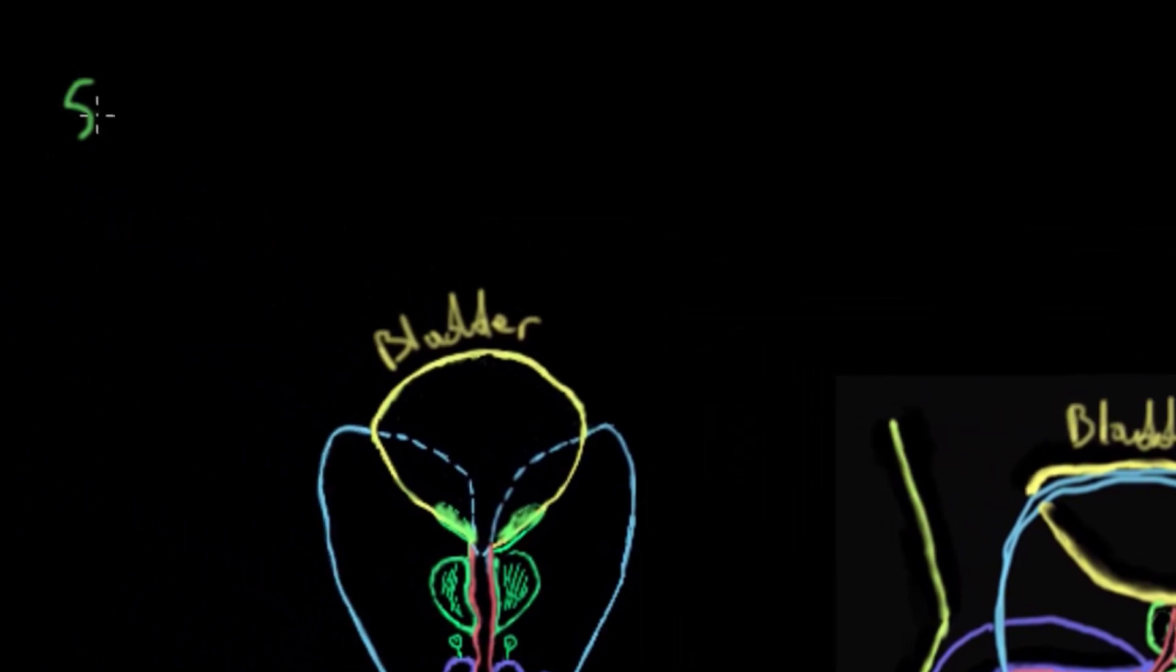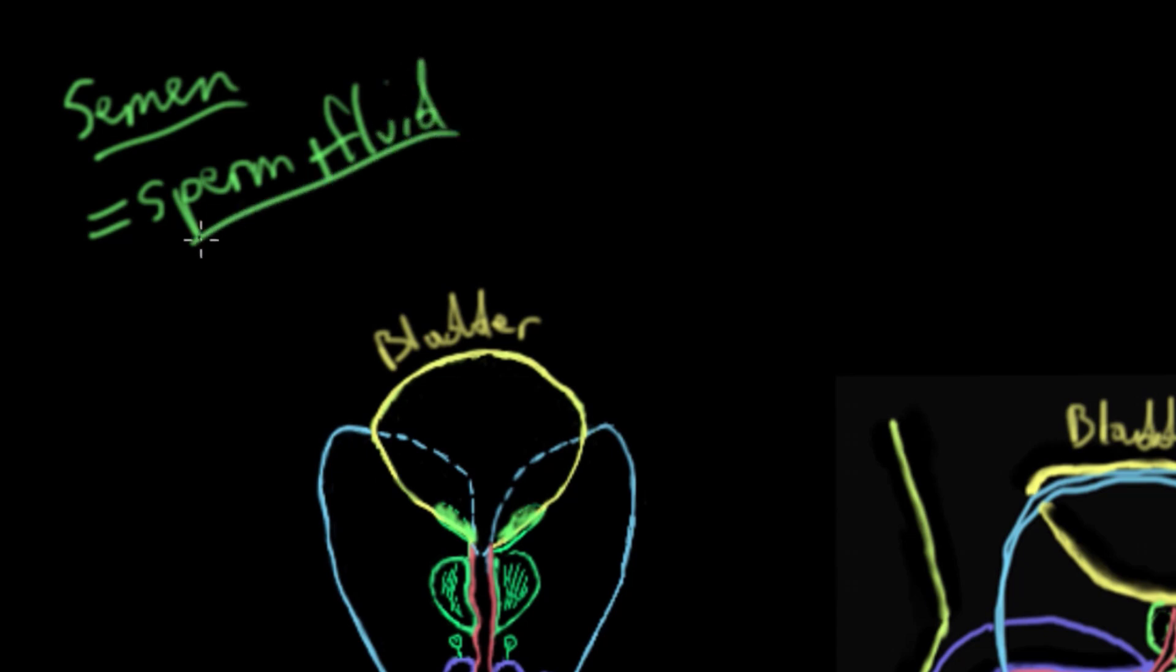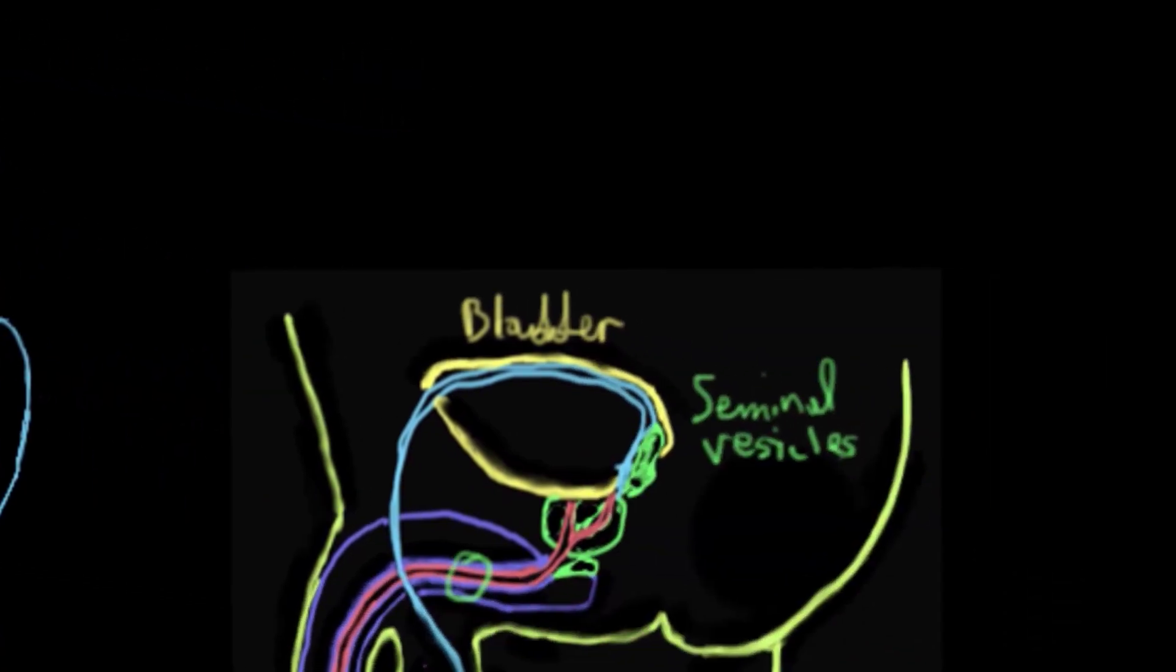Semen equals sperm plus the fluid that it picks up on the way from the accessory glands. The fluid that the sperm pick up from the seminal vesicles is actually somewhat alkaline. That's to neutralize the somewhat acidic environments of the male's own urethra and the vagina where the sperm will end up.